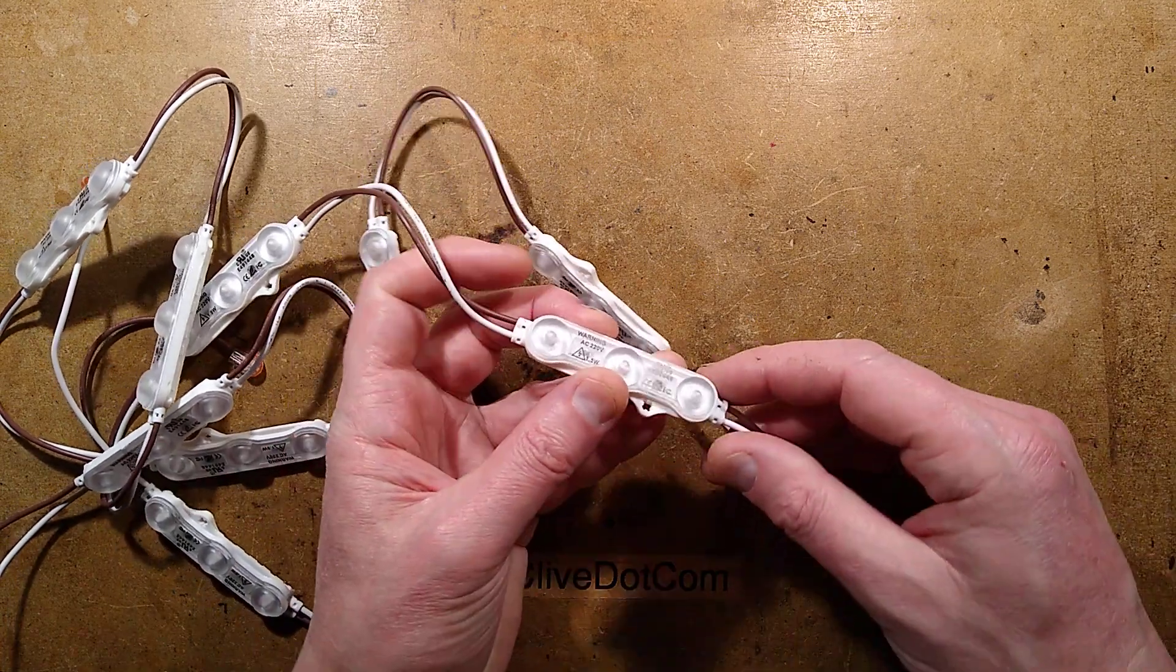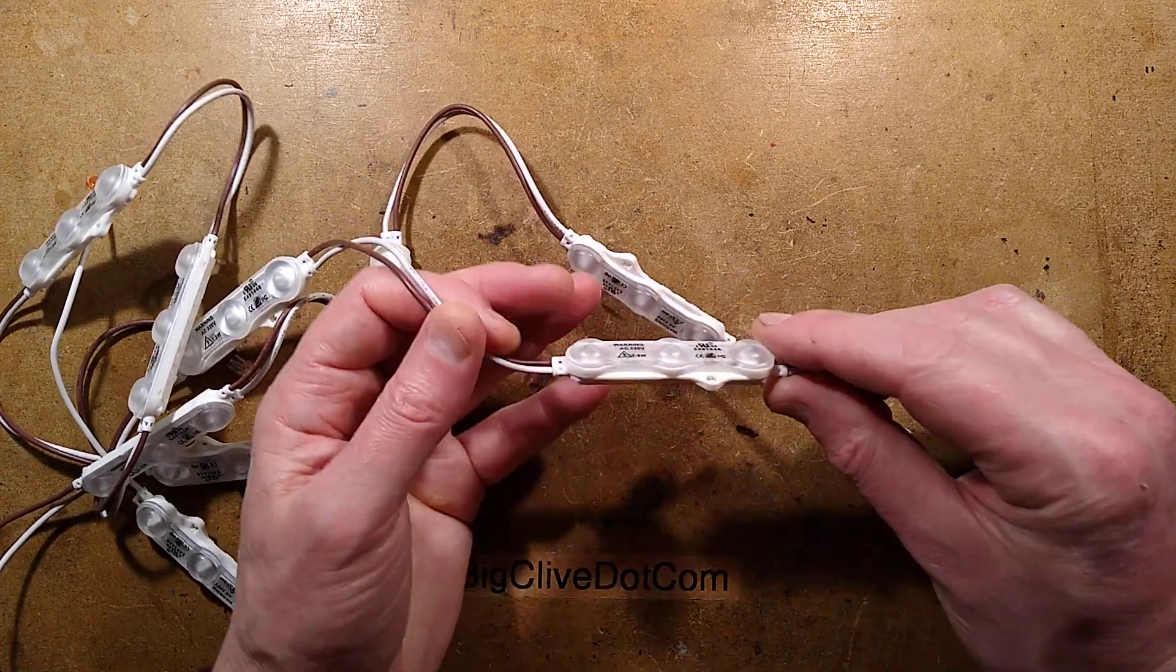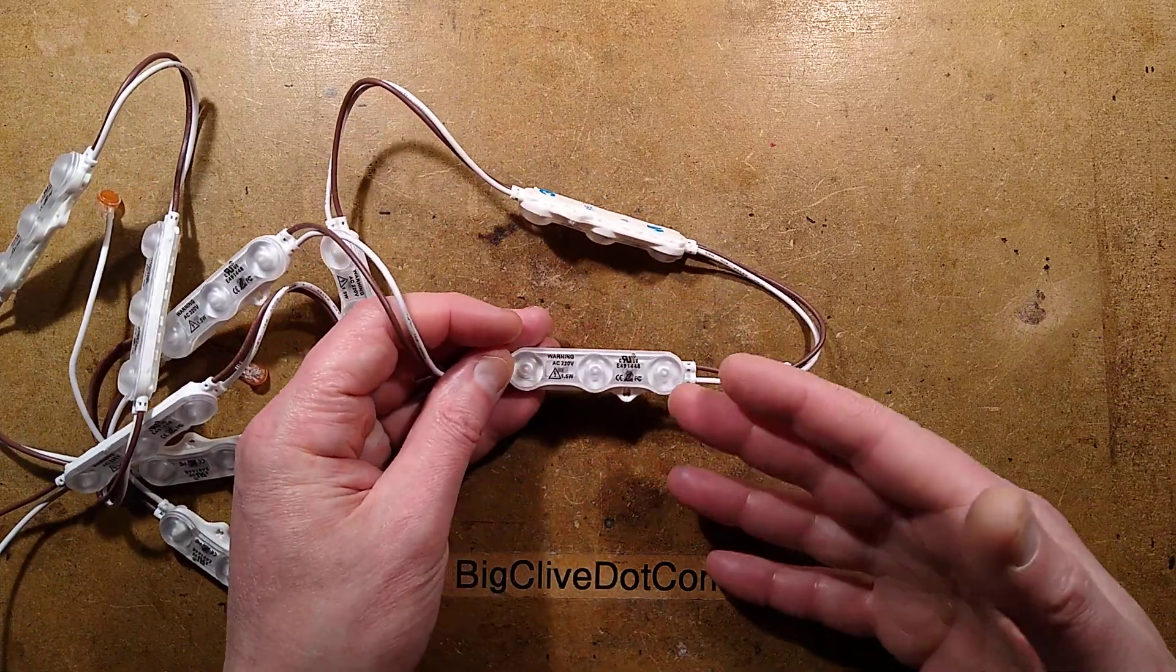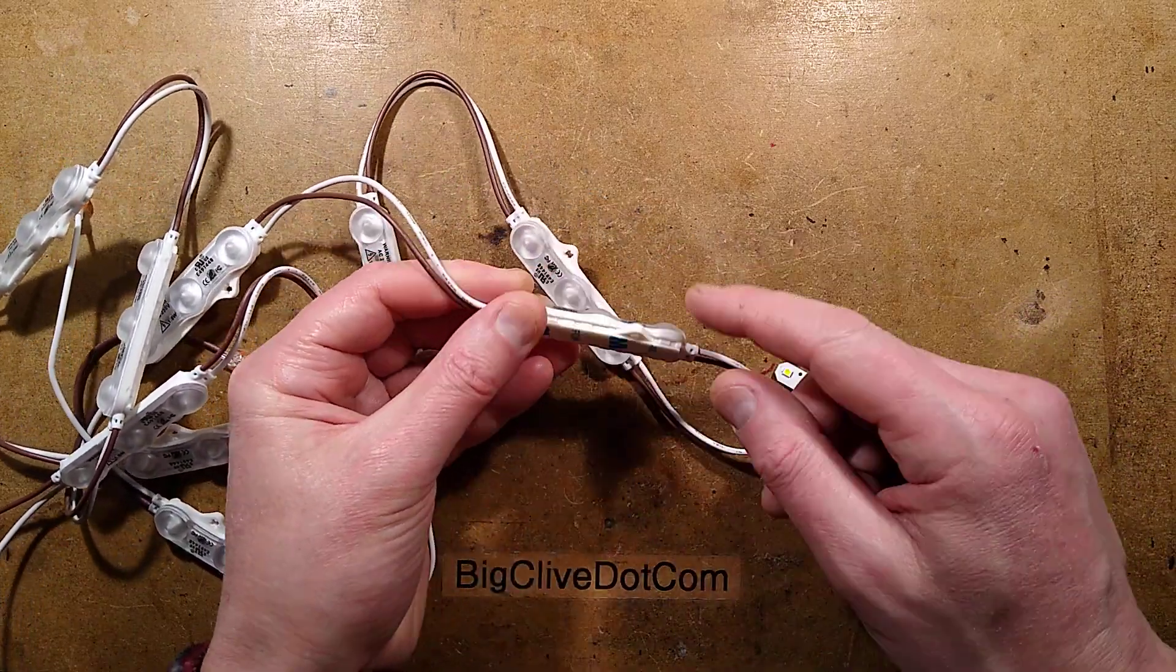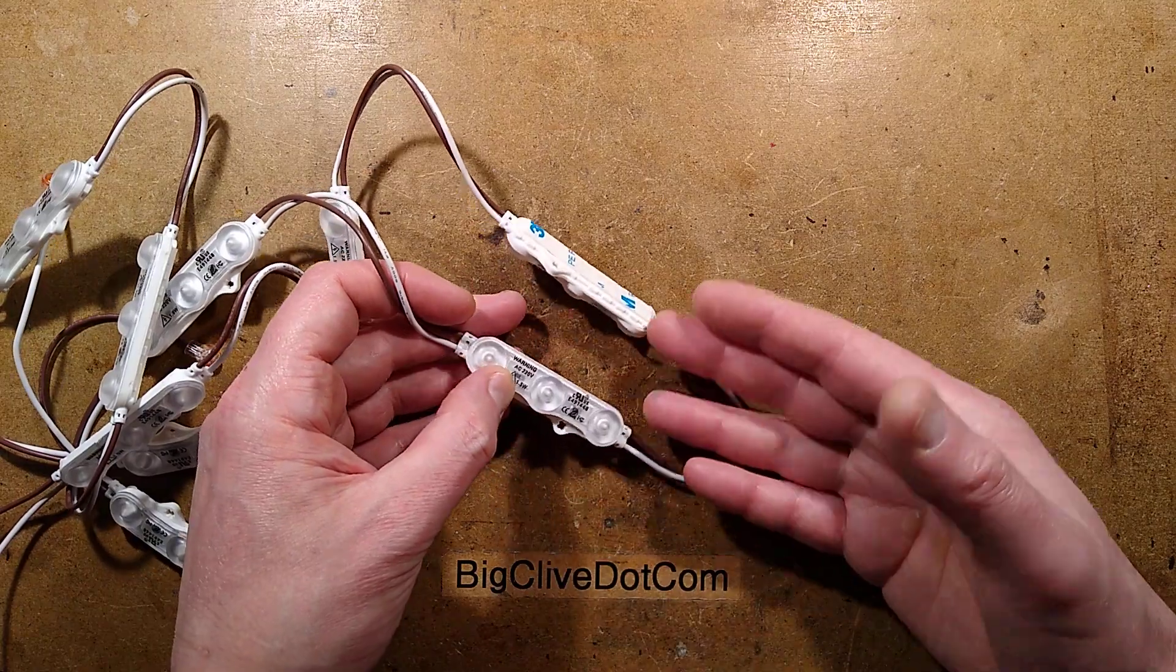In a recent video, I took apart an LED sign module. These are basically a string of modules that you mount behind signage, either with double-sided tape or a screw, and it provides illumination with the signage.